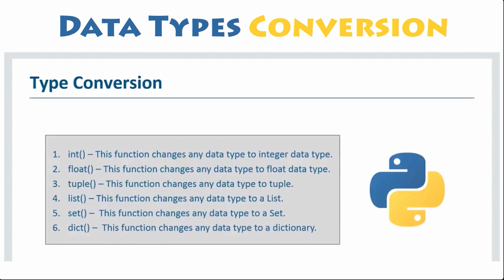As you have seen along the previous examples, you can get the data type of any object by using the type function and the isinstance function to check whether an object belongs to a particular class.